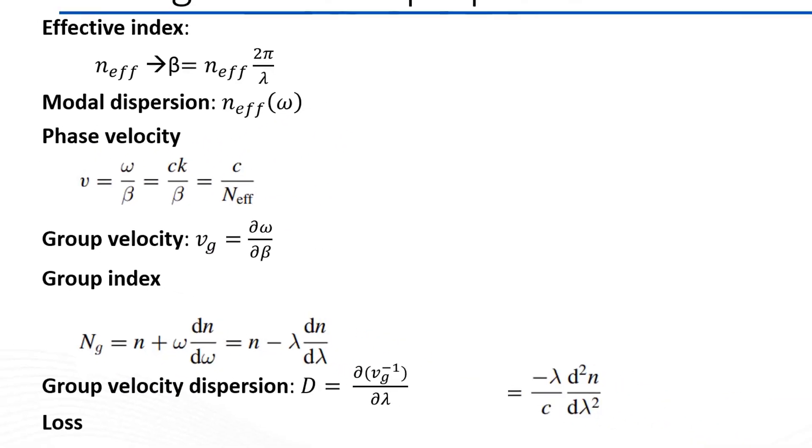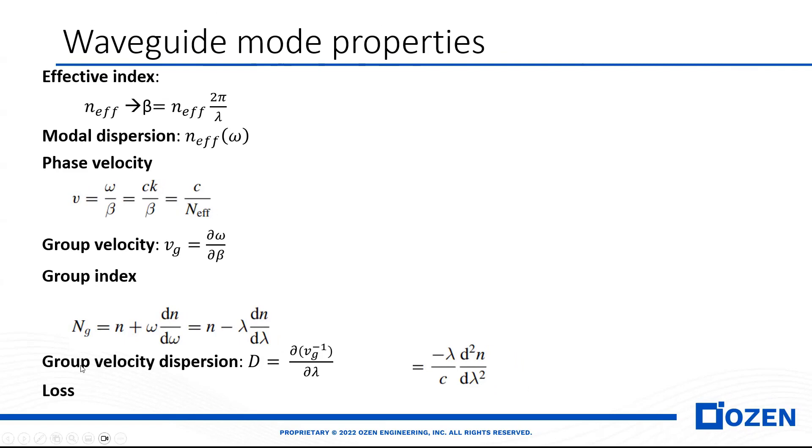The group velocity dispersion is also a very important parameter, especially for communication. Imagine that we have a pulse, and our pulse includes different wavelengths. Each wavelength experiences a different effective index, so it means they experience different velocities.